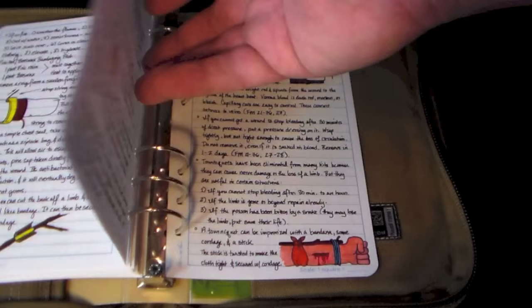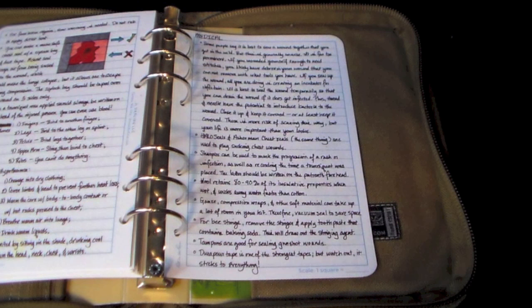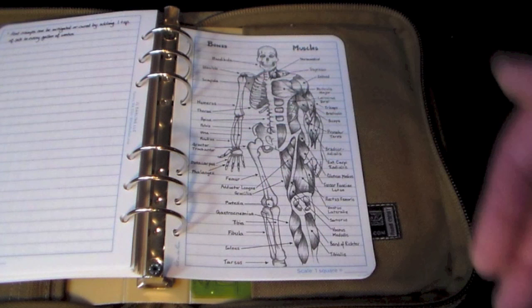So this is a large section, not only on outdoor medicine, but also a little bit on like trauma. For instance, how to treat a gunshot wound, things like that. At the end of my medical section, I have some basic hand-drawn anatomy charts.